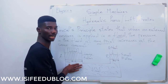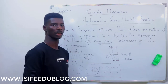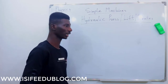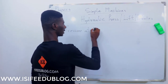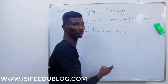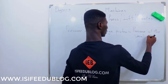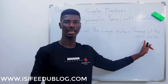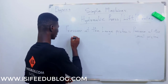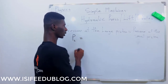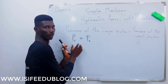Let's go further to derive the mechanical advantage and the velocity ratio of the hydraulic press, just as we did for other machines in previous videos. The pressure at the large piston — where the load is — is equal to the pressure at the small piston, where the effort is being applied. We can call the pressure at the larger piston P_L, and it is equal to the pressure at the smaller piston.